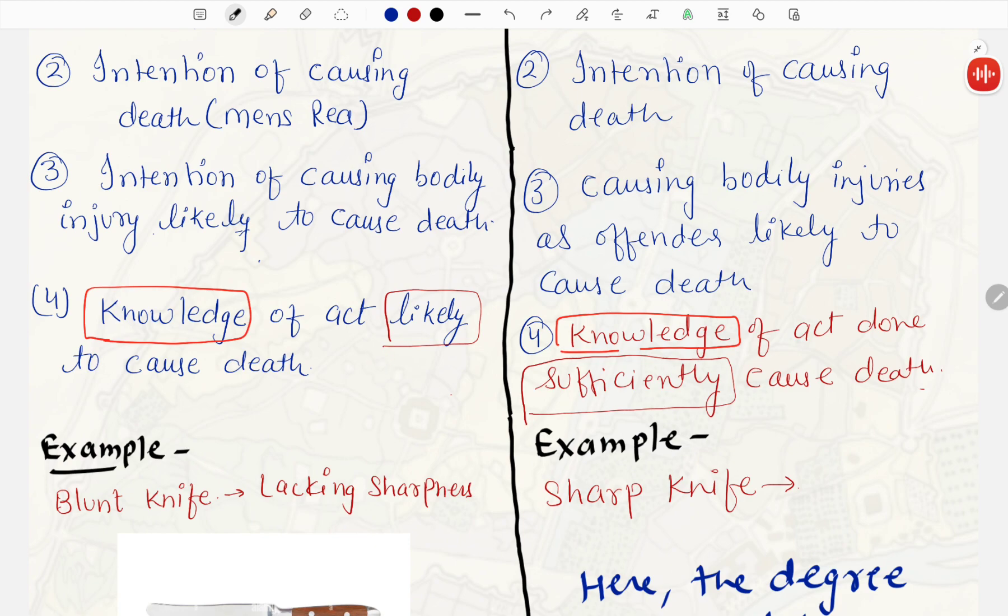But in Culpable Homicide, the knowledge of act likely to cause death, we are using word likely. In murder, there is a knowledge of act done sufficiently cause death. Agar hume knowledge hoti hai, ki koi bhi act sufficient hai, isko marne ke liye, to woh murder ke andar aayega. Agar koi act likely hai, it may cause a death, woh aata hai Culpable Homicide ke andar.